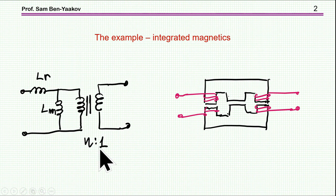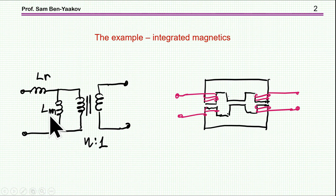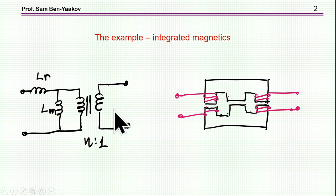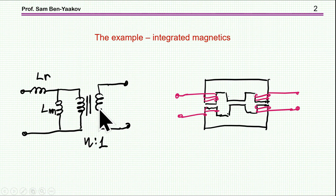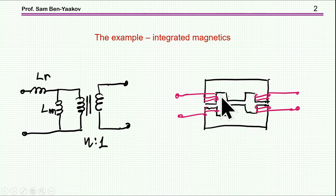The issue I'm going to cover in this presentation is how to deal with the so-called integrated magnetics. For example, if we have a case in which we would like to build a magnetic network consisting of a number of components — like an inductor, another inductor, and a transformer — this will be typical of an LLC converter. One way is to use discrete components, like a tightly coupled transformer with another inductor in parallel and one in series. Or we can use so-called integrated magnetics: one device that actually does everything, both the transformer and the two inductors.